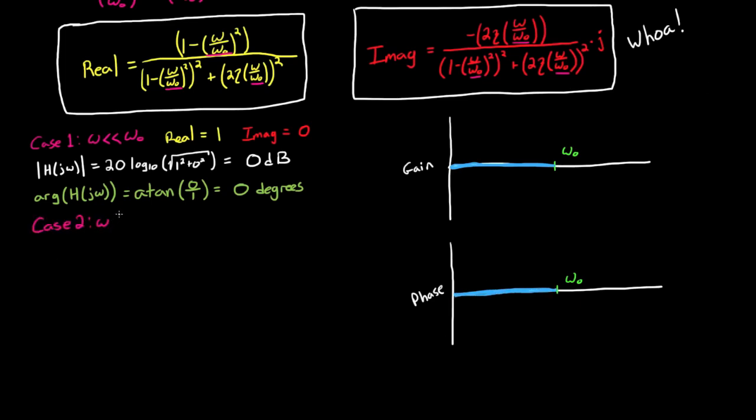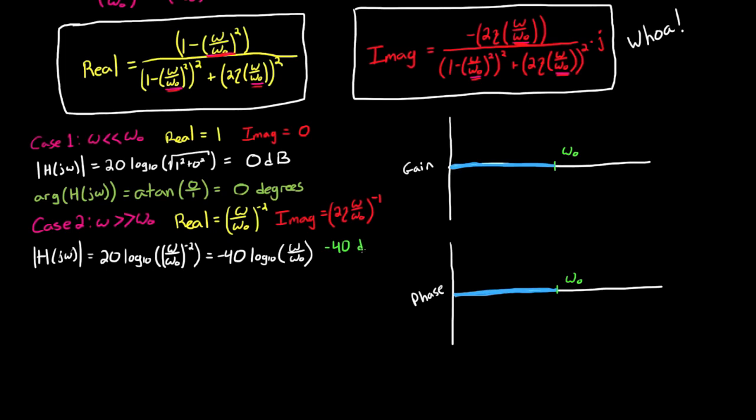The second case is when omega is much greater than the break frequency. In this case, omega over omega-0 dominates the equation, and the real component can be approximated as omega over omega-0 to the negative 2 power. And the imaginary component can be approximated as 2 zeta omega over omega-0 to the negative 1 power. To find the magnitude, note that the real component is much smaller than the imaginary component, because it has a square rather than a single power. So as omega gets larger and larger, the magnitude is going to follow the trend of the real component, which is minus 40 dB per decade. So we can draw that line in starting at the break frequency.